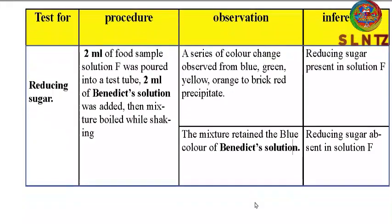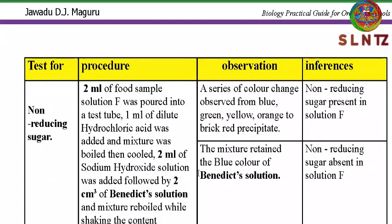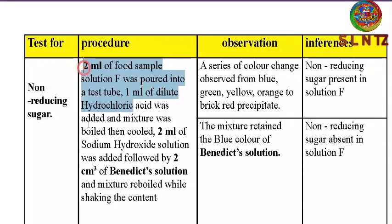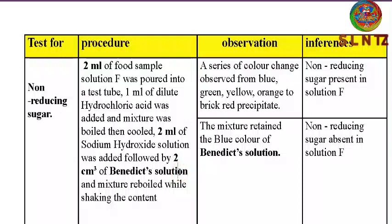For the non-reducing sugar test — this is a longer procedure: '2 ml of sample solution F was poured into the test tube. 1 ml of diluted hydrochloric acid was added, the mixture was boiled then cooled. 2 ml of sodium hydroxide was added, followed by 2 ml of Benedict's solution.' Important note: do not use the chemical formula HCl — write 'hydrochloric acid.' Do not use NaOH — write 'sodium hydroxide.' Record the procedure as shown. You can pause the video and write it down.